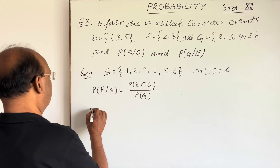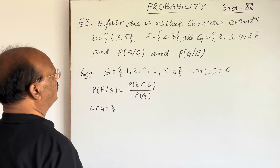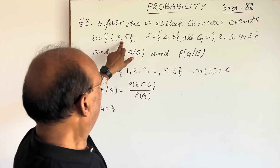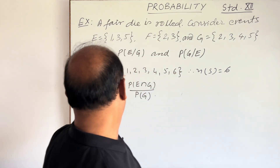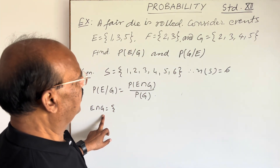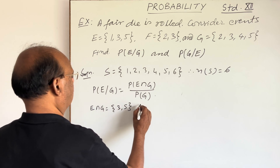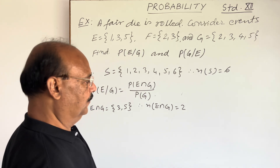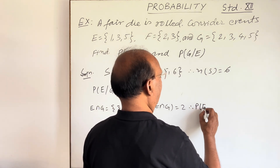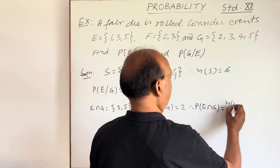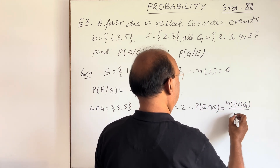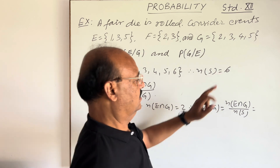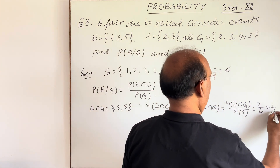First of all, we will find E intersection G. Event E has elements 1, 3, 5 and event G has elements 2, 3, 4, 5. So in E intersection G, the common elements are 3 and 5. Therefore N(E∩G) = 2. And probability of E intersection G equals N(E∩G) divided by N(S) = 2/6 = 1/3.